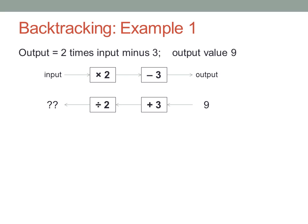Well, just work backwards through the rule, undoing each step. Nine plus three is twelve. Twelve divided by two is six. Therefore, the input value must have been six to get an output value of nine.